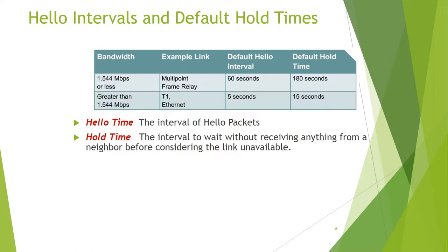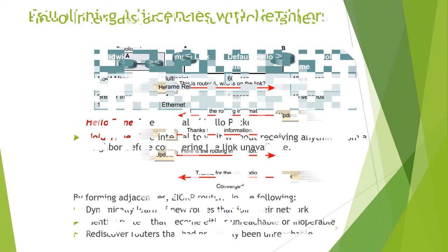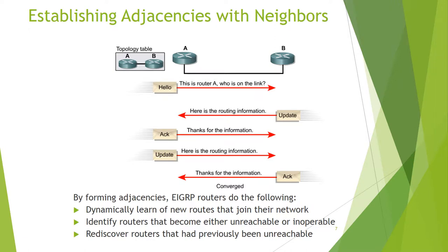Update routing information is shared by forming EIGRP adjacency. Dynamically, we learn of new routes that drive their network, identify routers that become either unreachable or inoperable, and discover routes that have previously been unreachable.